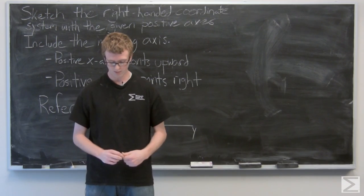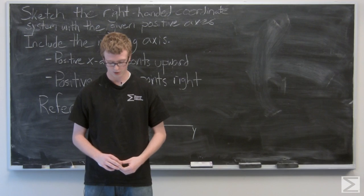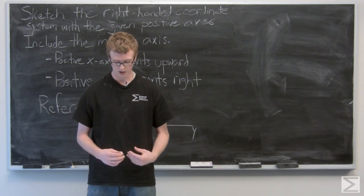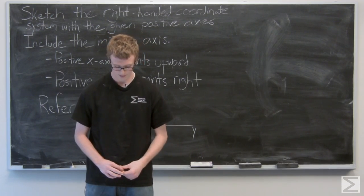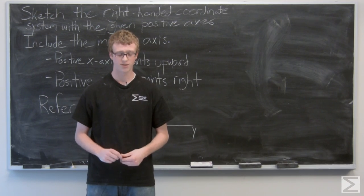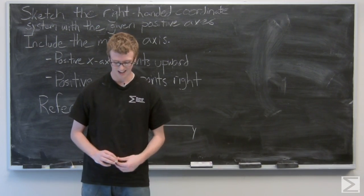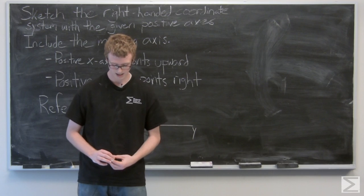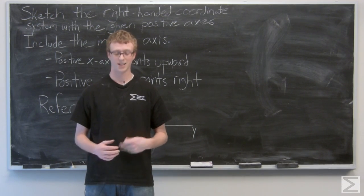In the following problem, you're told which way two of the positive axes point on a sheet of paper as you would look at them in R3. We're asked to sketch the positive axes as we're given and then include the missing positive axis, given that the coordinate system is to be right-handed.